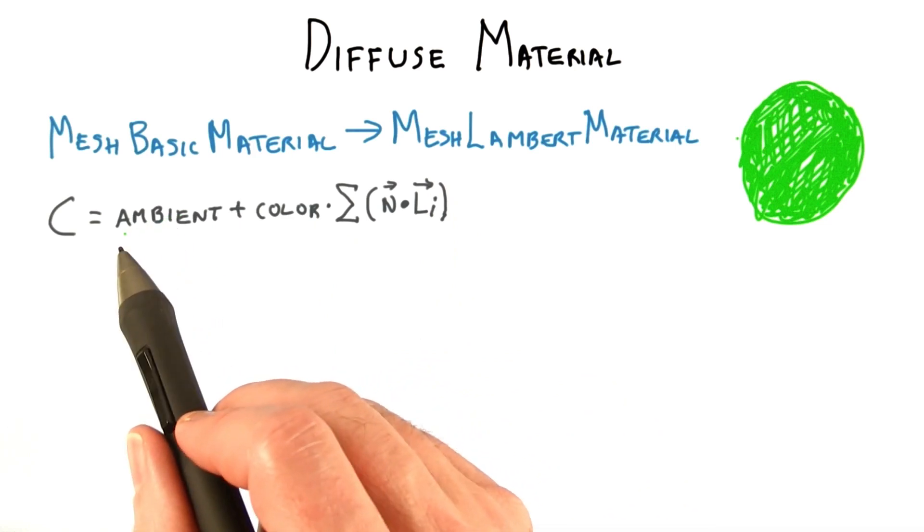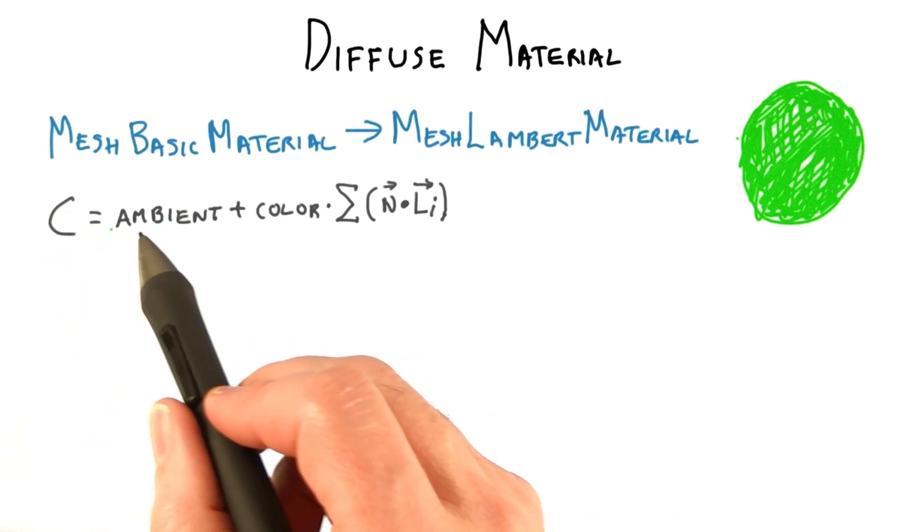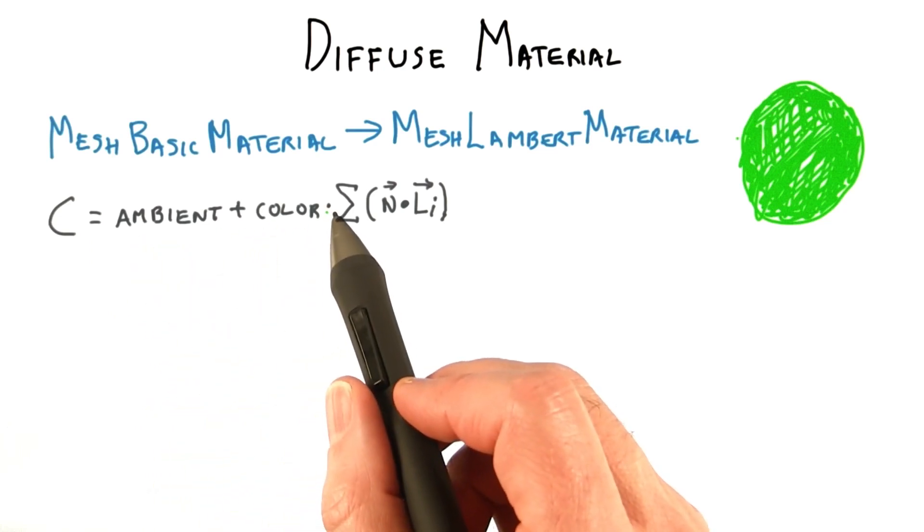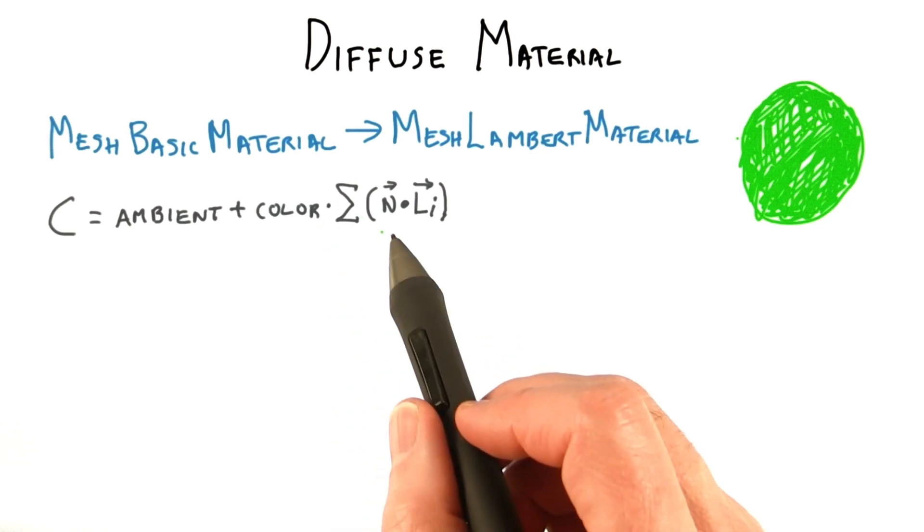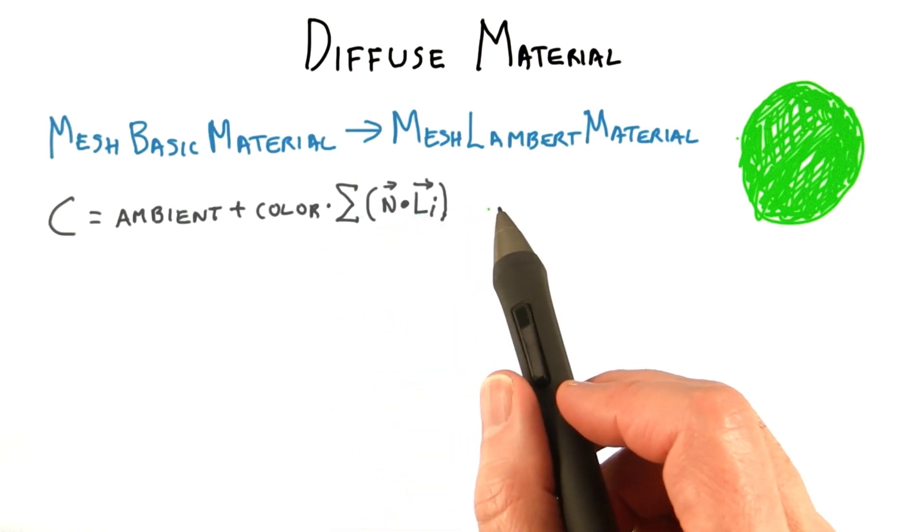The Lambert material has a few separate color components. The equation that the Lambert material uses is: the color equals ambient plus the material color times the sum of the normal dotted with each light source. We're going to ignore the emissive component, since in practice that component is rarely used.